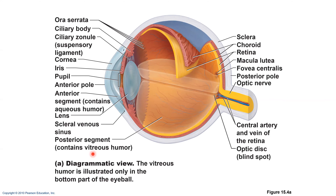The cornea needs to stay clear so light can enter the eyeball. That's why there are sodium pumps in the corneal endothelium — they keep the clarity of the cornea. Also in the cornea you will find numerous pain receptors that contribute to blinking and tearing reflexes.